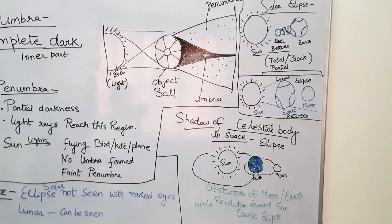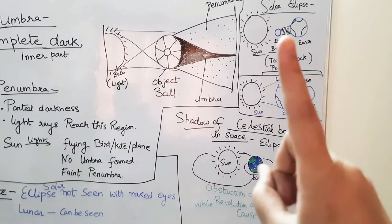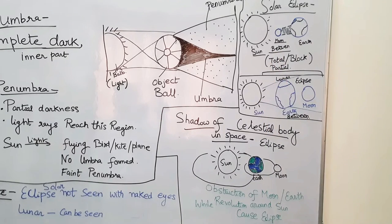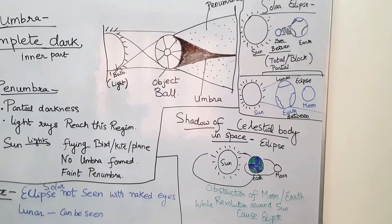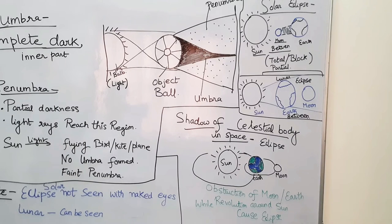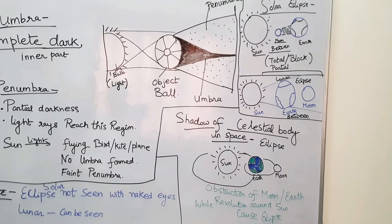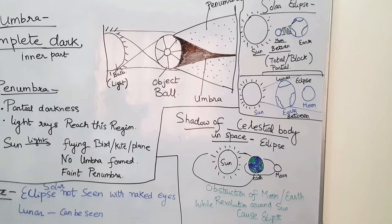A solar eclipse occurs when the moon blocks the sunlight coming from the sun from falling on the earth. A certain part of the earth is shadowed by the moon — it can be a partial block or a total block. Note that a solar eclipse should not be viewed with the naked eyes. We should use an X-ray film or similar protection so that harmful UV light does not fall directly on our eyes.